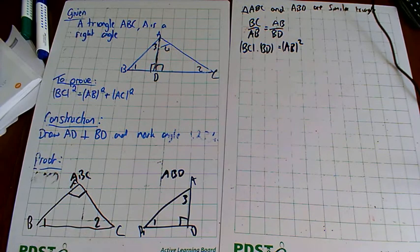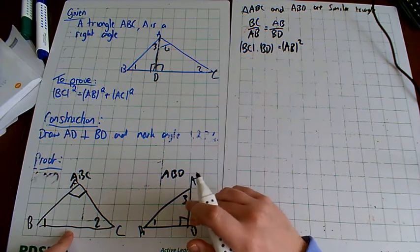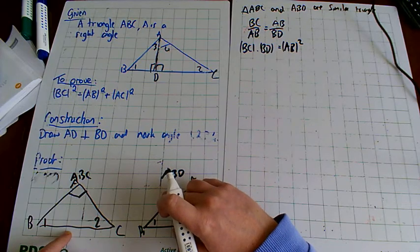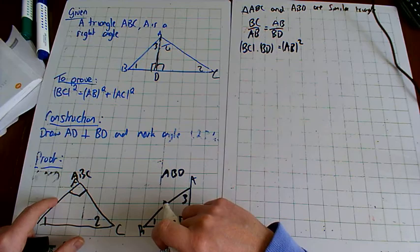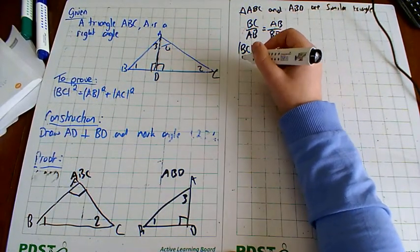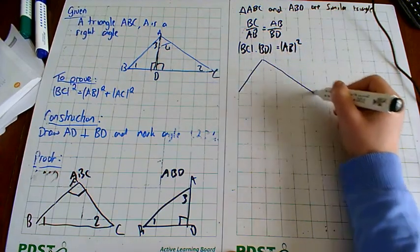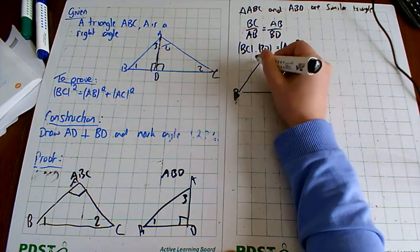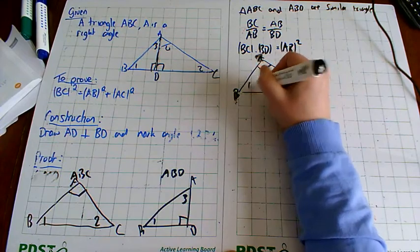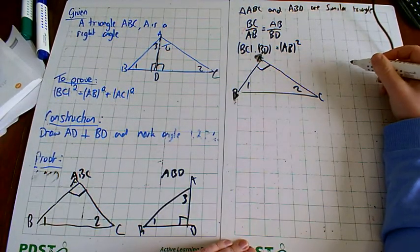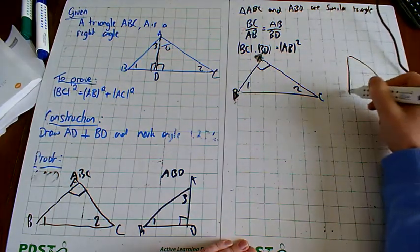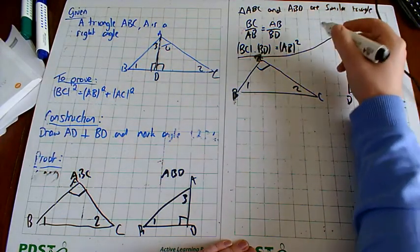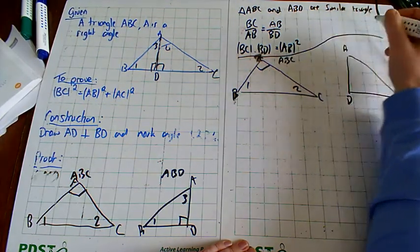Now you do exactly the same for the other triangle. Again take the big triangle BAC — right angle, angle one, angle two — and now compare it to triangle DAC. We have point D, A, C. So the triangles being compared are ABC and ADC.